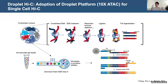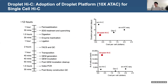In our design, after restriction enzyme digestion and ligation, we used TN5 to perform chromatin fragmentation instead of using another restriction enzyme. We then followed the 10X microfluidics to carry out molecular barcoding. We termed this method Droplet Hi-C, which allows the measurement of chromatin structure in tens of thousands of single cells within short times.